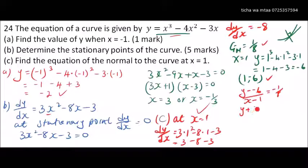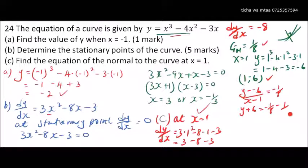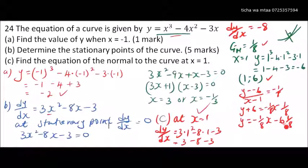Expanding: y + 6 = x/8 - 1/8. Taking 6 to the other side: y = (1/8)x - 1/8 - 6. Writing in proper form: y = (1/8)x - 49/8. That's the equation of the normal.